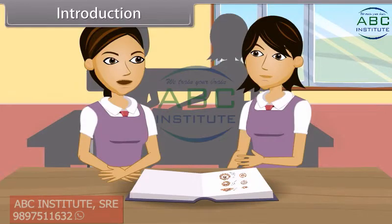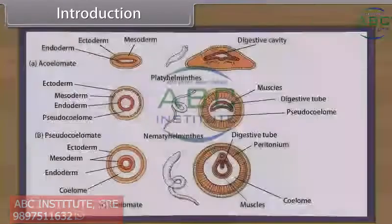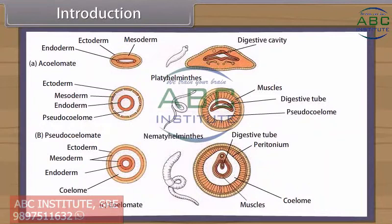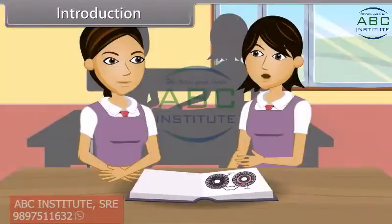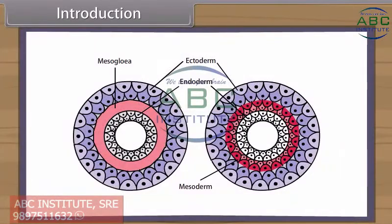On the basis of body cavity, the animals are either acoelomates, e.g. coelenterates and flatworms, or pseudocoelomates, e.g. nematodes. According to the presence and number of germ layers, animals are either diploblastic, e.g. sponges and coelenterates, or triploblastic, e.g. flatworms to mammals.